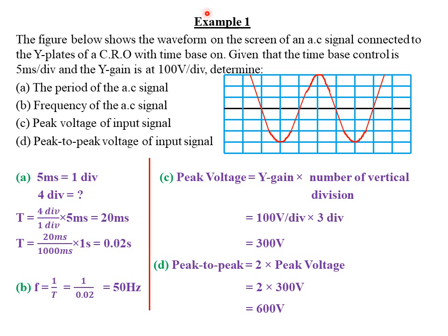Today we are looking at examples involving waves displayed on the screen of a cathode ray oscilloscope. The first example states that the figure below shows the waveform on the screen of an alternating current signal connected to the Y plates of a cathode ray oscilloscope with time base on. Given that the time base control is five milliseconds per division and the Y gain is at a hundred volts per division.